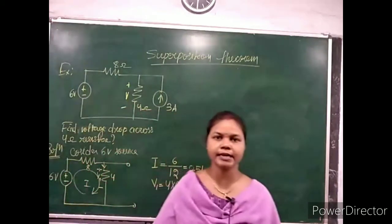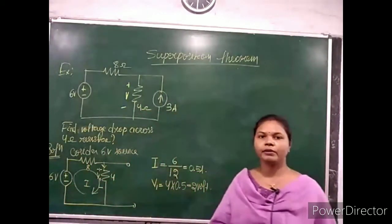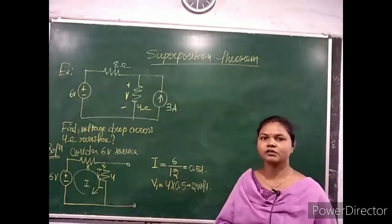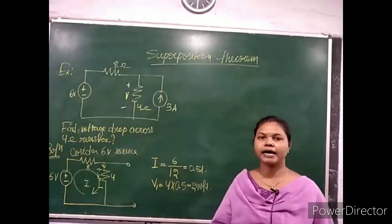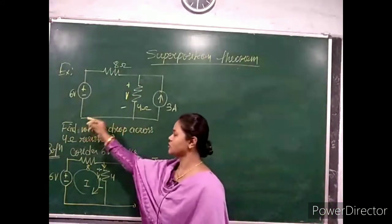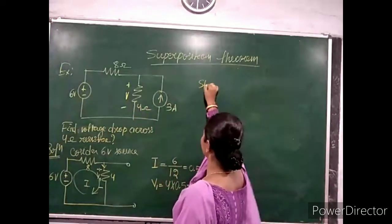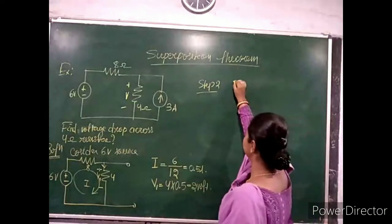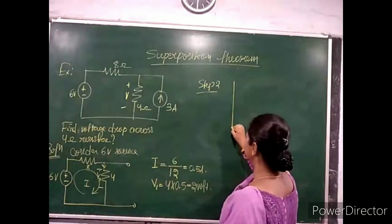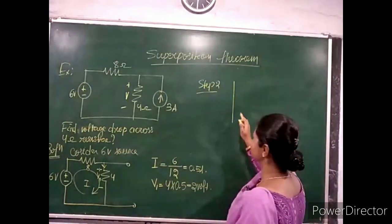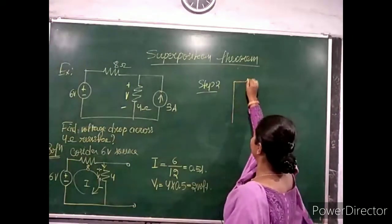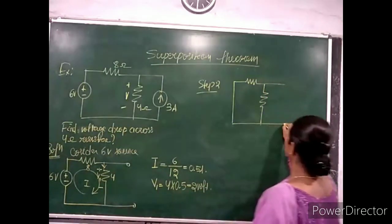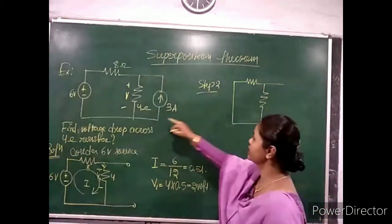In the second step, we consider the 3-ampere current source and neglect the 6-volt voltage source by short-circuiting the path where the voltage source was present. The simplified circuit diagram for step two has the voltage source path shorted, while all other elements remain connected as in the original circuit.